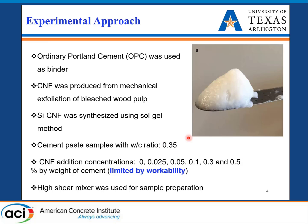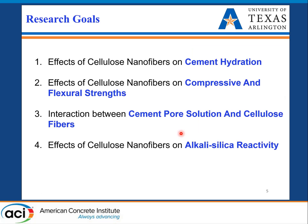The water-to-cement ratio was 0.35 and we used a high shear mixer with ordinary Portland cement. I will briefly focus on how cellulose nanofibers affect the cement hydration process, mechanical strength — compressive and flexural — the interaction between cement pore solution and cellulose fibers, and how we can use this nanomaterial to suppress alkali-silica reaction.